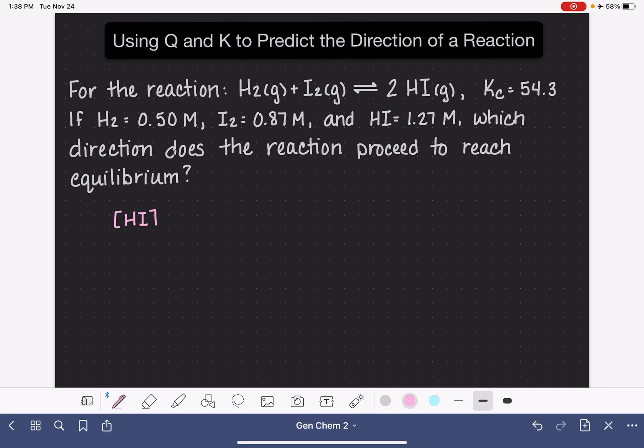So for this particular problem, we're looking at the concentration of HI squared. HI is our product. The coefficient is 2, so it's being raised to the 2. HI squared over H2 squared times I2 squared.